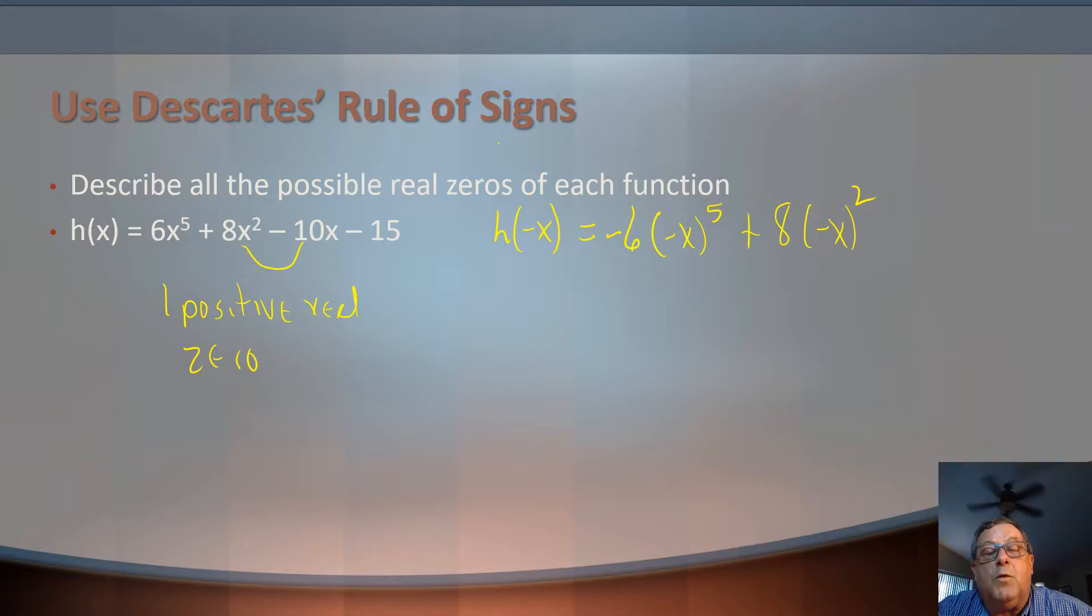Then we've got negative 10x. That's x to the first power, so that would change the sign to 10x, and then minus 15. Let's see how many sign changes we've got now. We've got one from here to here, and we have one from here to here, so we've got two possible sign changes.